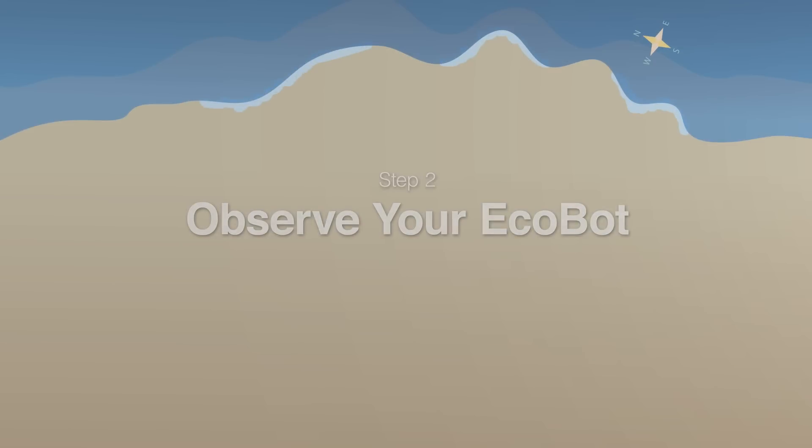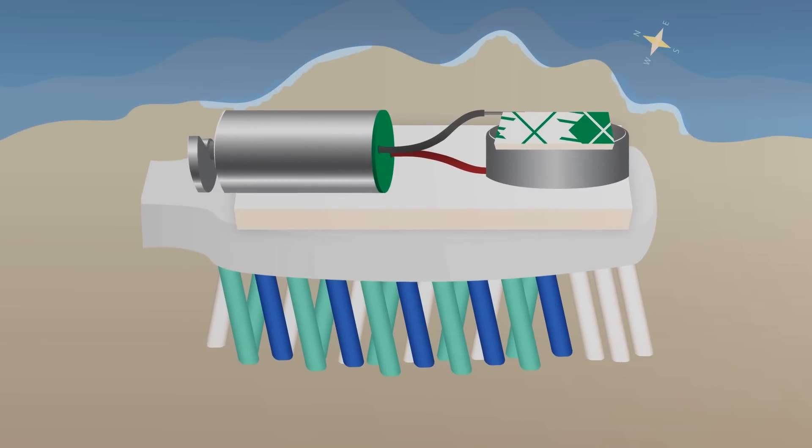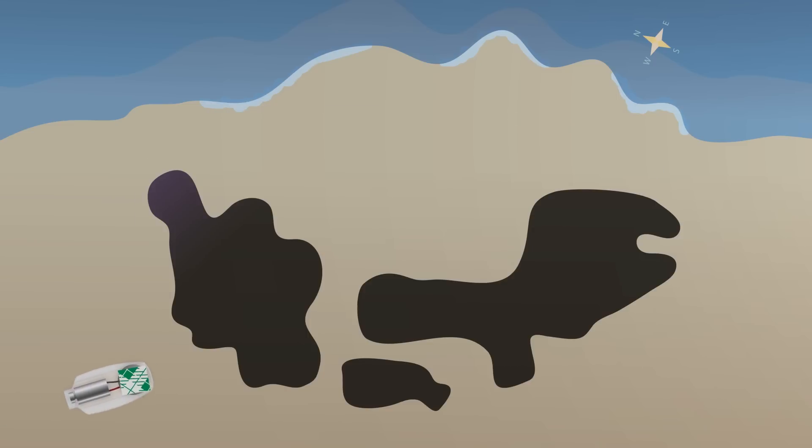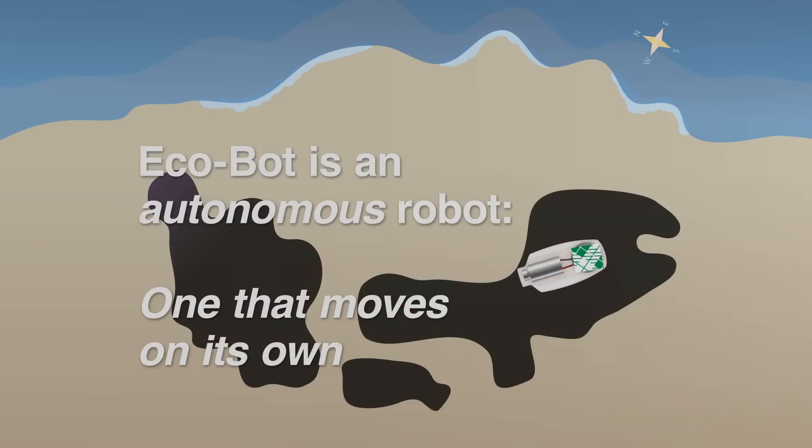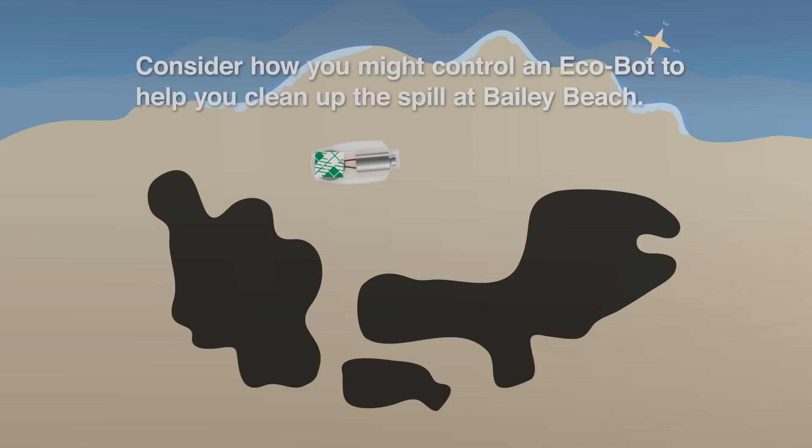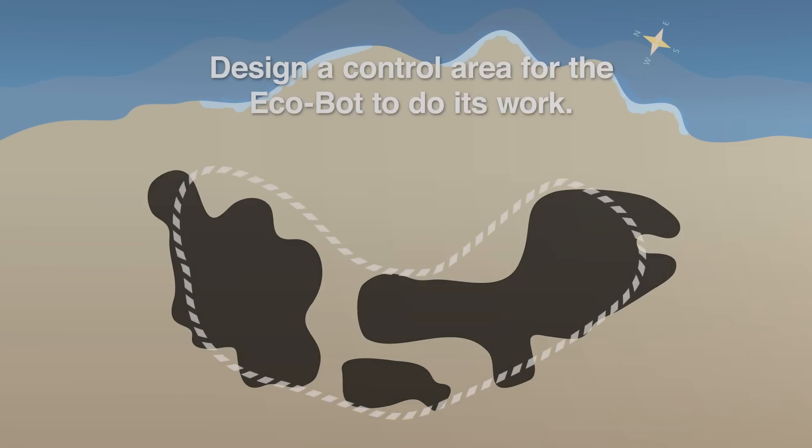Step 2: Observe your Ecobot. Observe what your Ecobot can do and how it moves. Since the Ecobot is an autonomous robot, or one that moves on its own, consider how you might control your Ecobot to help you clean up the spill at Bailey Beach. Get started by designing a control area for your Ecobot to do its work.